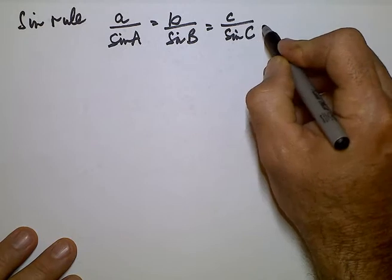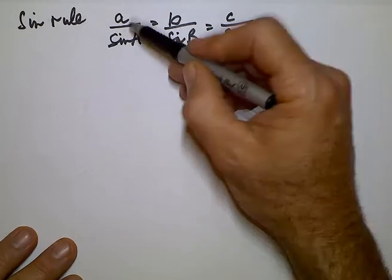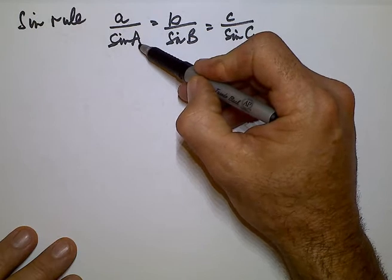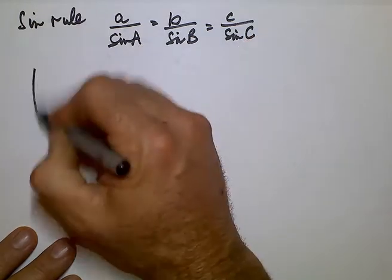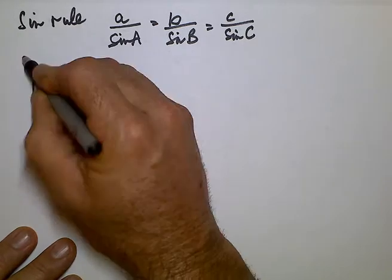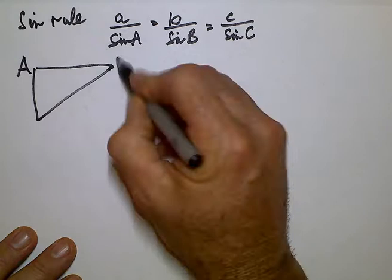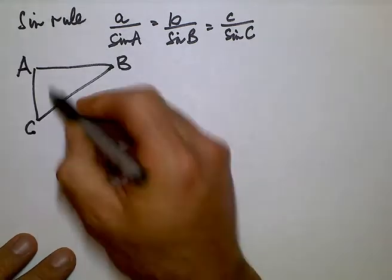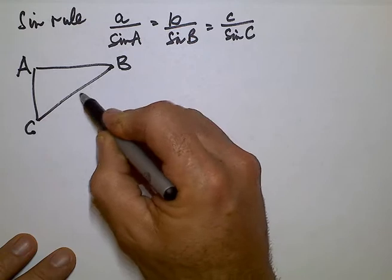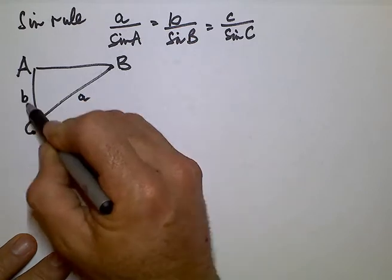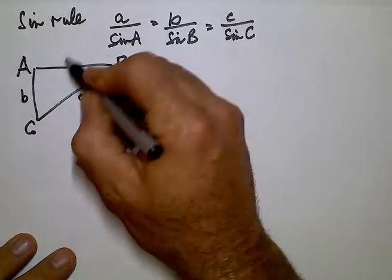You'll notice that lowercase is on top, uppercase is on the bottom. That's because when we draw a triangle, we use the uppercase for the angles and the lowercase for the sides. The side is opposite the angle. Side B is opposite angle B. Side C is opposite angle C.